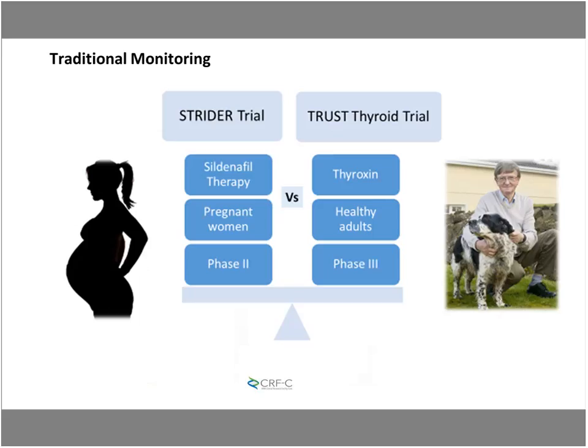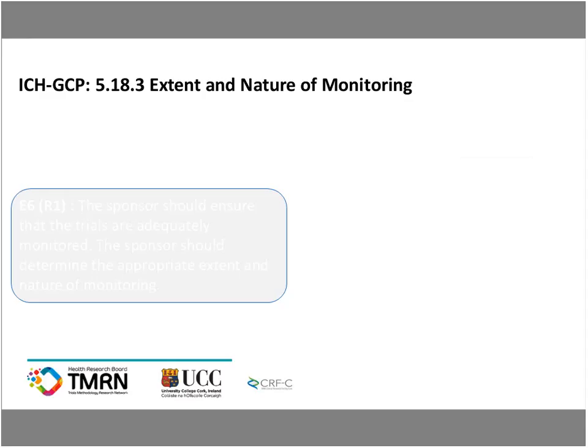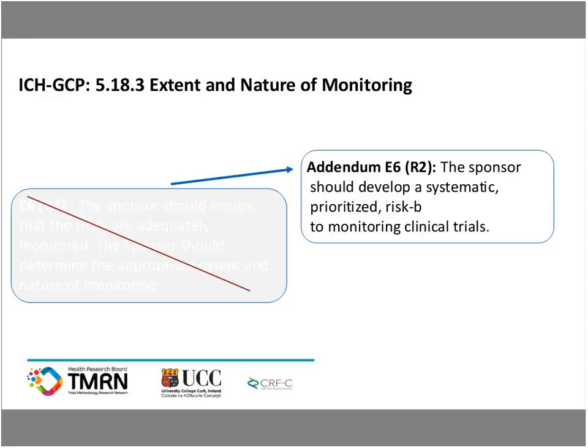To give a practical look at what I mean: here I've listed two studies being conducted at UCC — University College Cork. Looking at the study populations: the STRIDER study population is pregnant women, and the TRUST study population is healthy older adults. The risks associated with these two populations are very different. So you could argue: does TRUST require the same amount of monitoring as STRIDER when the risk profiles are so different?